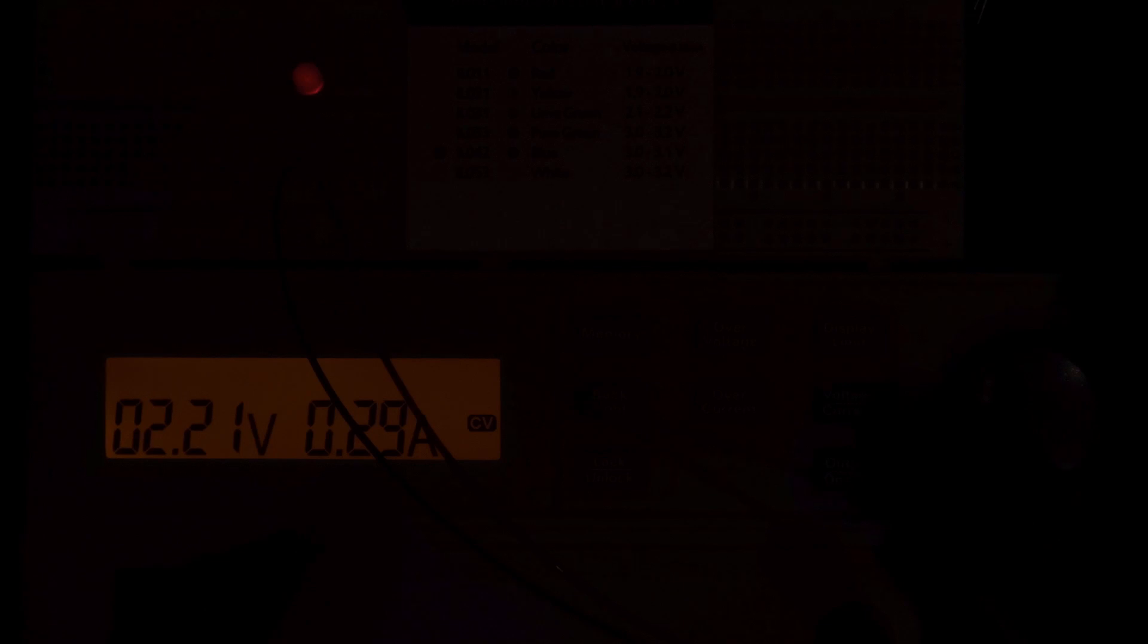And then if I continue to increase the voltage, the LED is actually getting dimmer and dimmer. The current is really going up. We're now at almost 300 milliamps. And remember, the LED is spec to work at 20 milliamps, and we're almost 300. And we're only a quarter of a volt now above, and the LED is completely out.